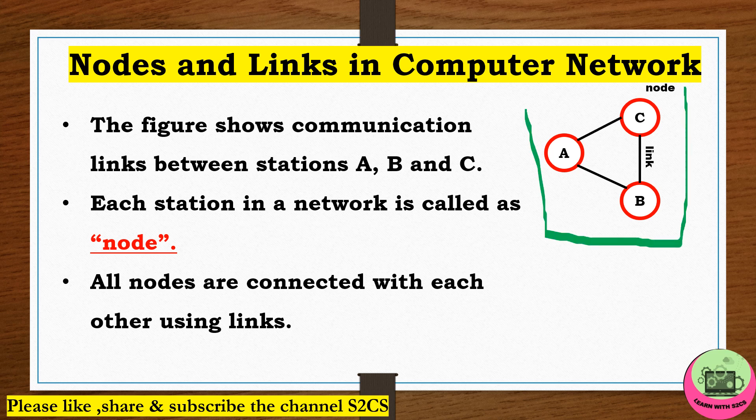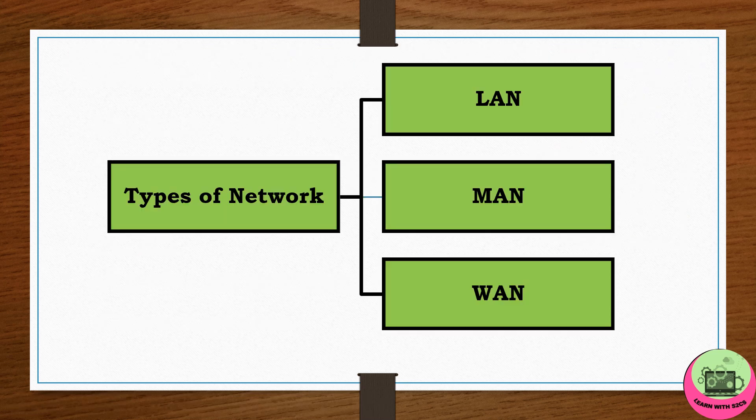Now you should know what nodes and links are in a computer network. With the help of a figure you can easily understand these terms. The figure shows communication links between A, B, and C. A, B, and C are stations, and these stations in a network are called nodes — so we have three nodes: A, B, and C. The nodes are connected using links.